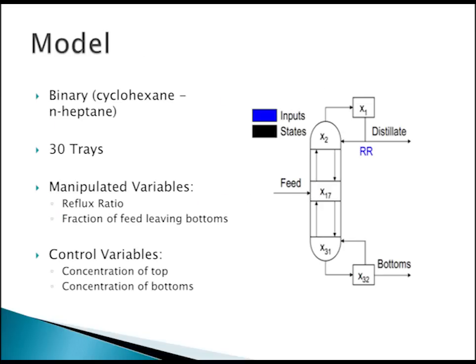We control concentrations coming out to achieve that. For this specific distillation column, we're separating two different components — it's a binary system, cyclohexane and heptane, with 30 trays and the feed coming in at the middle. We wanted to control the mass balances throughout it by changing the reflux ratio or the fraction of the feed coming out by opening and closing valves through our control process.